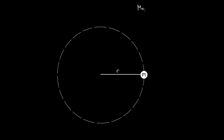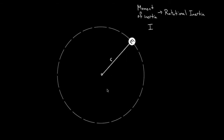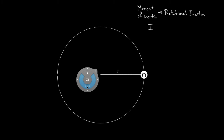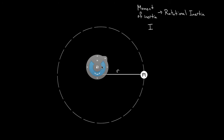We should talk more about the moment of inertia because this is something that people get confused about a lot. Remember, the moment of inertia is really just the rotational inertia — how much something is going to resist being angularly accelerated, meaning being sped up in its rotation or slowed down. If a system has a large moment of inertia, it's going to be very difficult to get it angularly accelerating, but if the moment of inertia is small, it should be relatively easy.